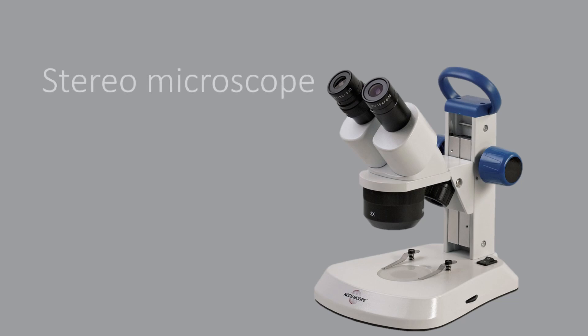But in stereo microscopes, the light source lies in the top, so they are better at seeing opaque specimens.